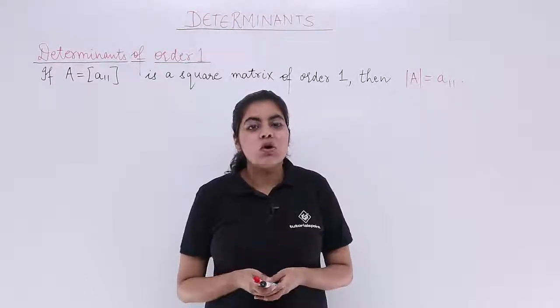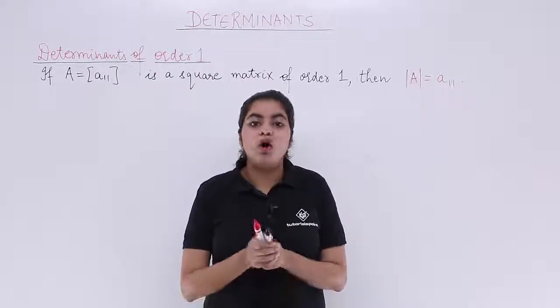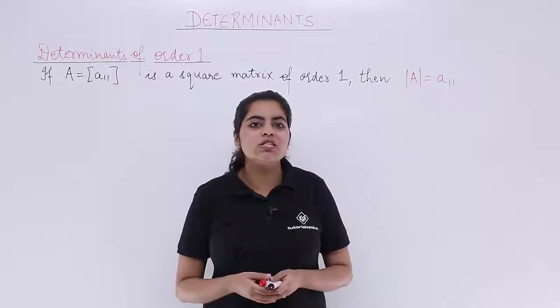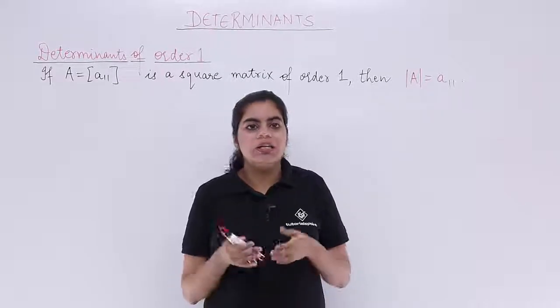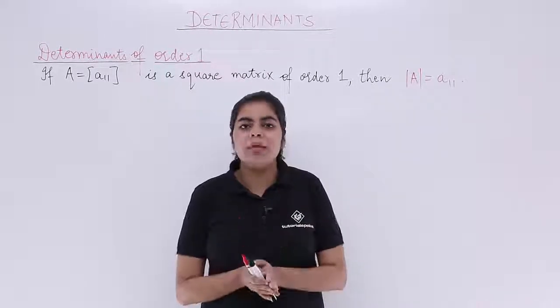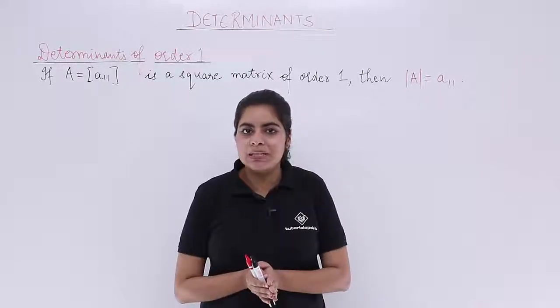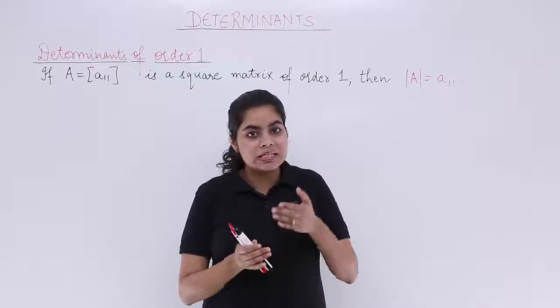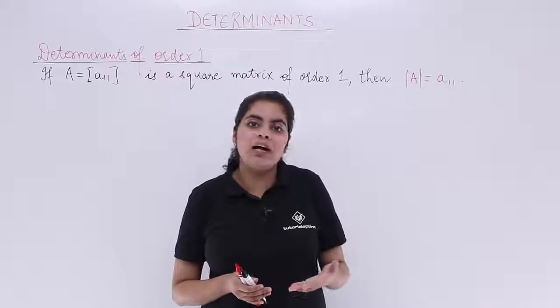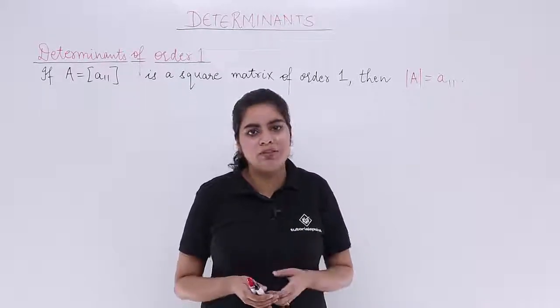In this video, let's see what is the value of determinant on the basis of order. We know the order is of a square matrix only in case of determinant, and the square matrix that we deal with up till now is maximum till 3 by 3 order.